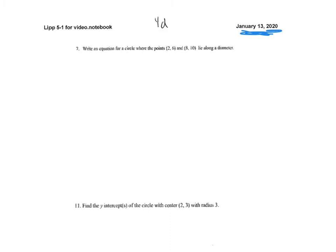Now I've got two points, (2, 6) and (8, 10), and I know those are the endpoints of a diameter.